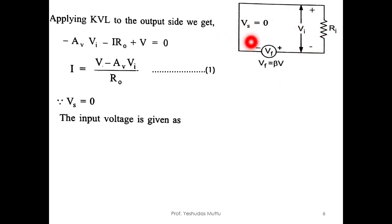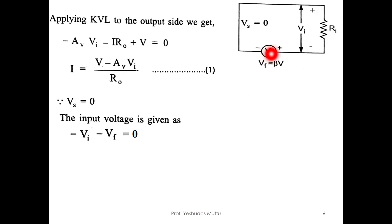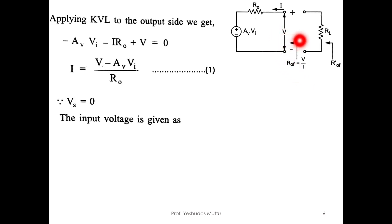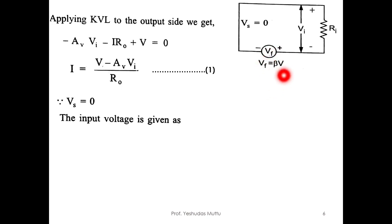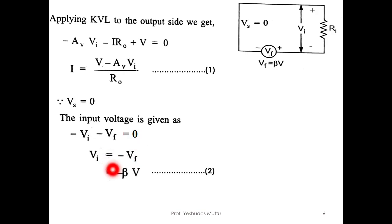Now look at the input side. Vs is zero, so we have Vi and Vf. Applying KVL in this loop: -Vi - Vf = 0, so Vi = -Vf. But Vf = β·V, where V is the output voltage. Therefore Vi = -βV. Call this equation two.